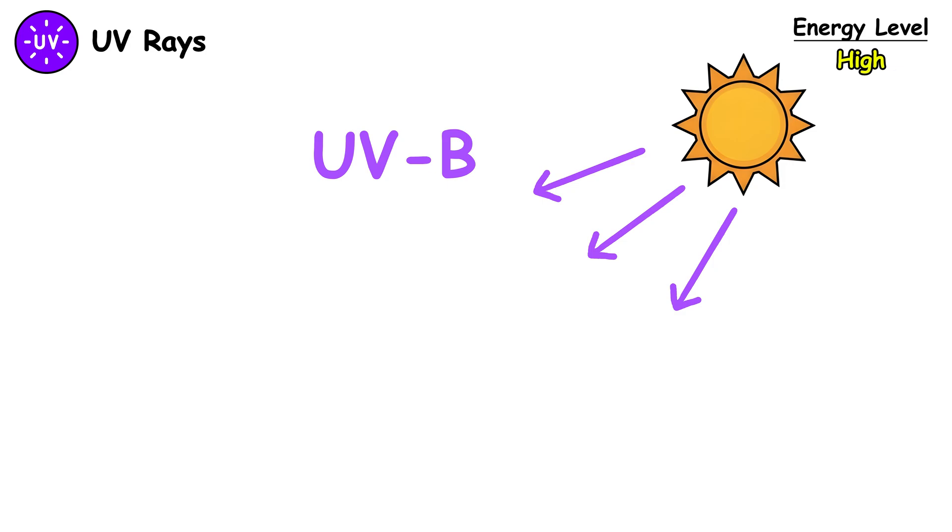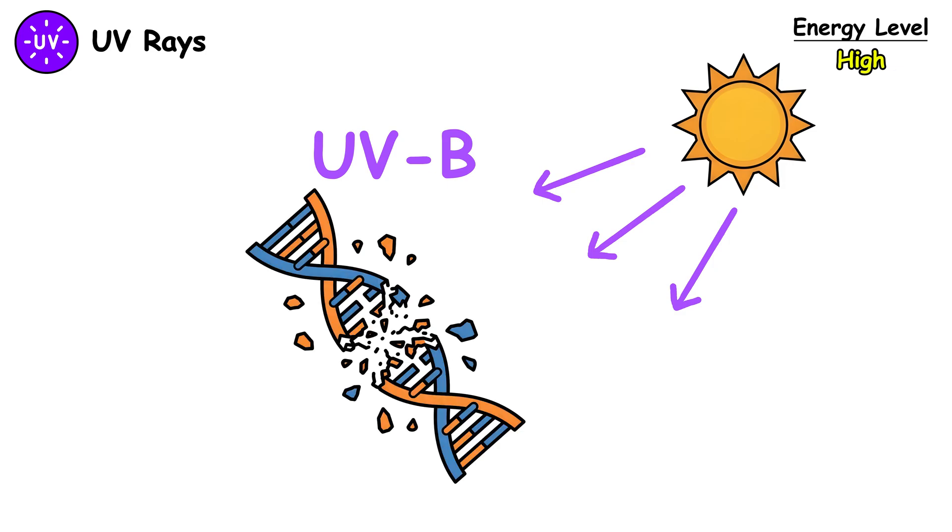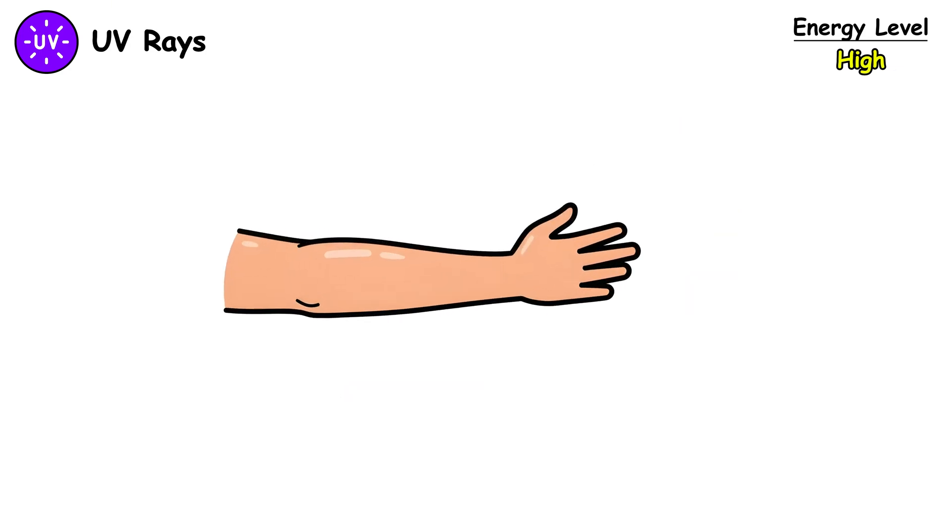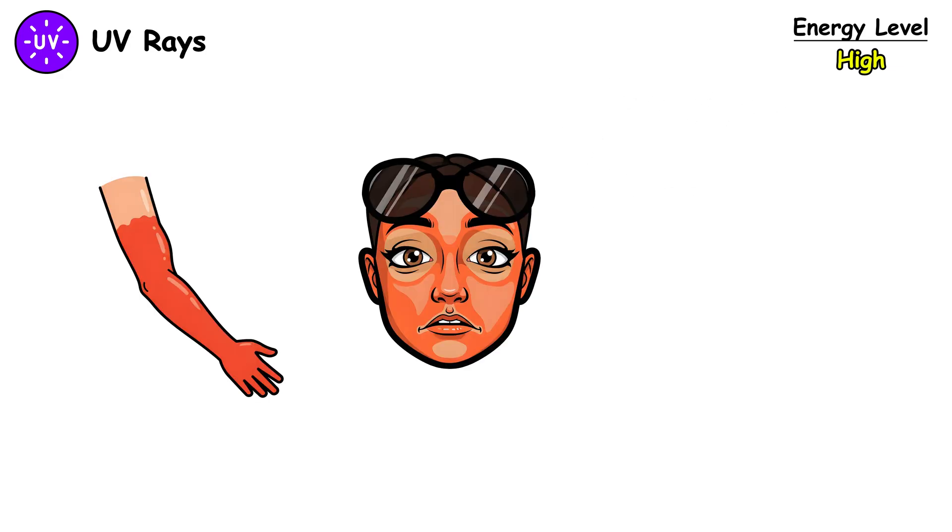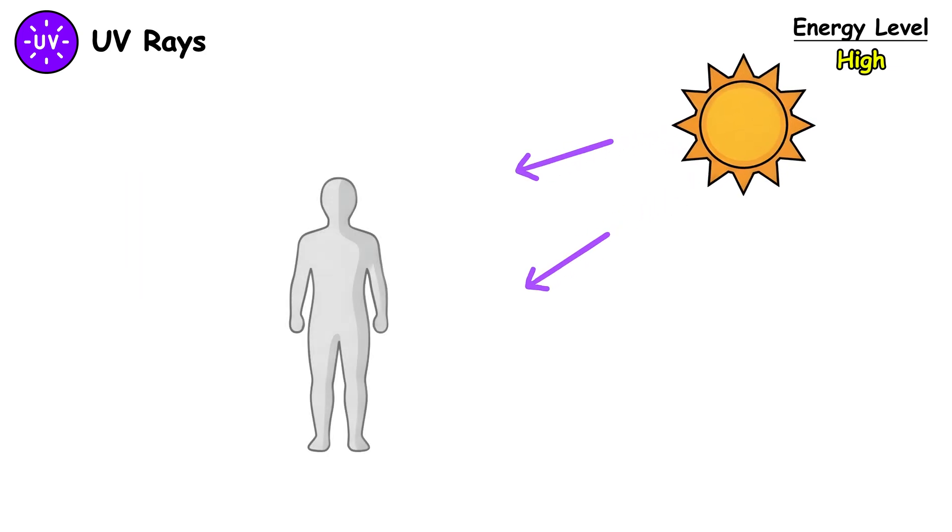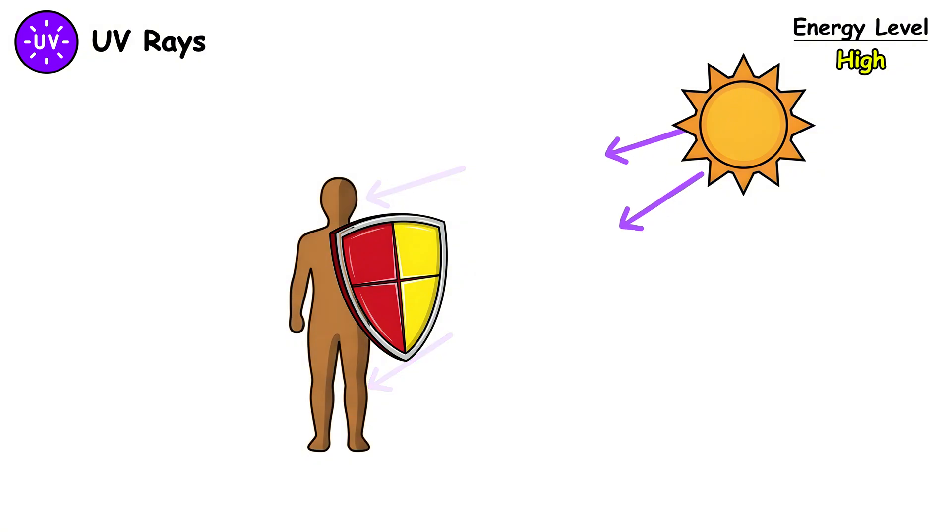UVB is more energetic and causes direct DNA damage in skin cells. This is what gives you sunburn. The redness, pain, and peeling are your body's response to massive cellular damage. UVB exposure triggers melanin production in the body as a defense mechanism, creating a tan.